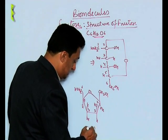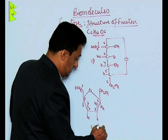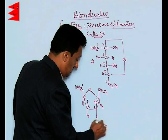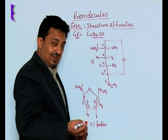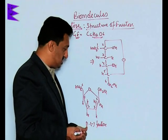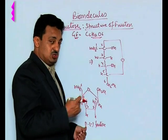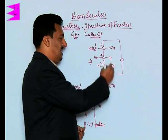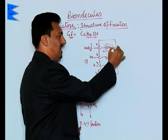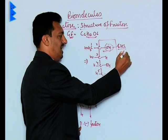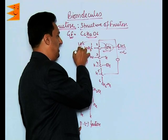Fructose is levorotatory, so it is designated as minus. It is D-fructose based on its relative configuration. Fructose also shows anomerism with respect to the OH group on the second carbon atom — if it is on the right hand side it is called alpha, and if it is on the left hand side it is called beta.